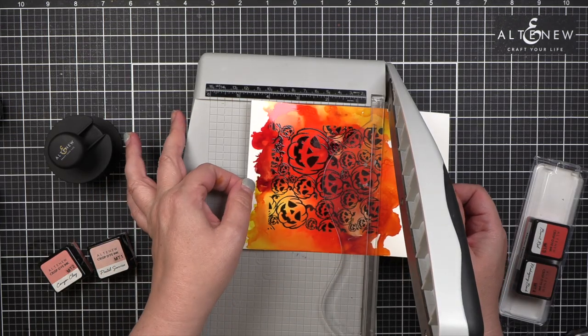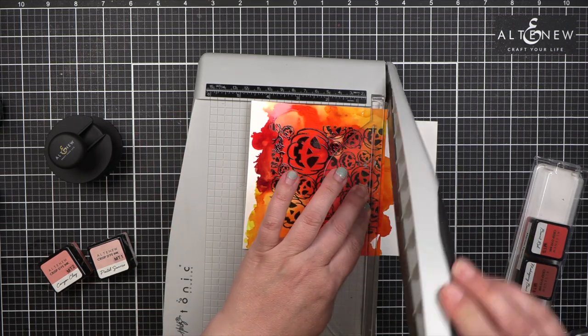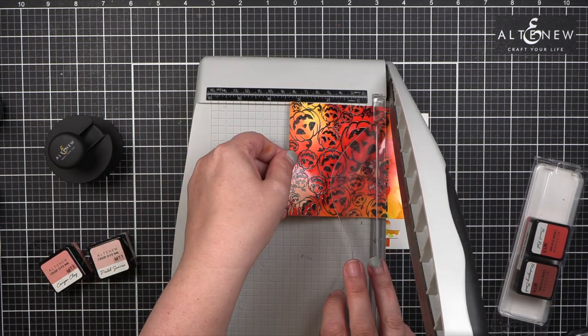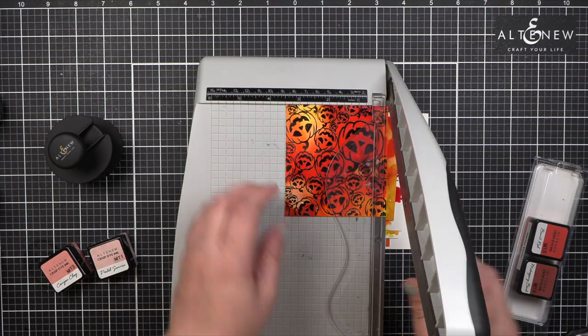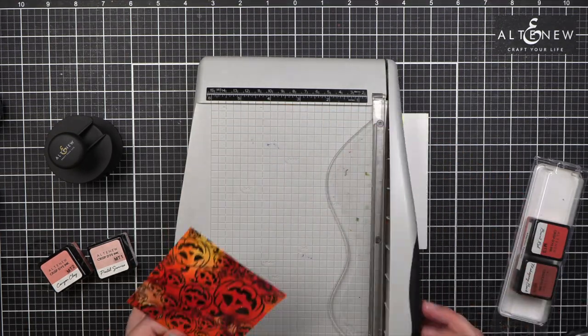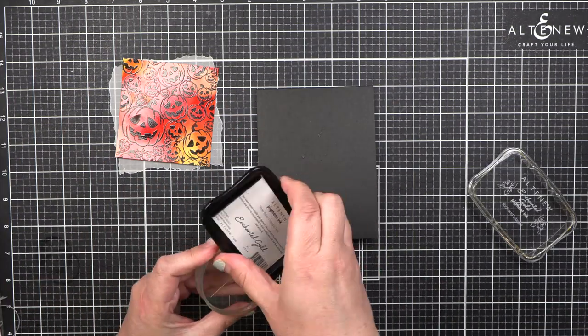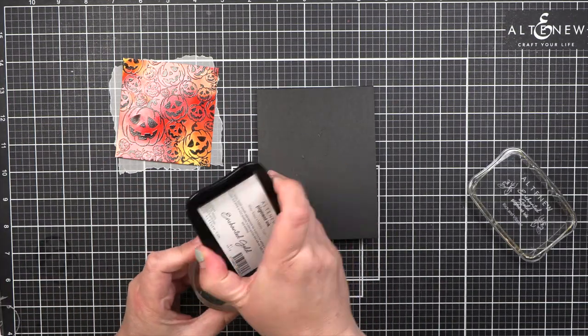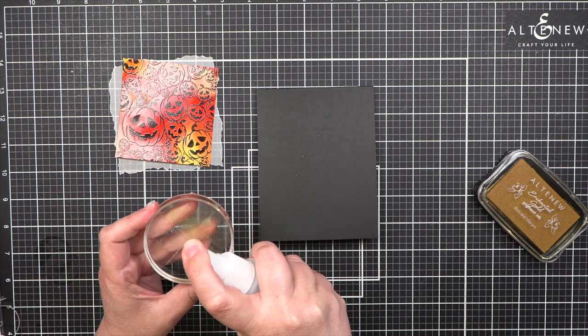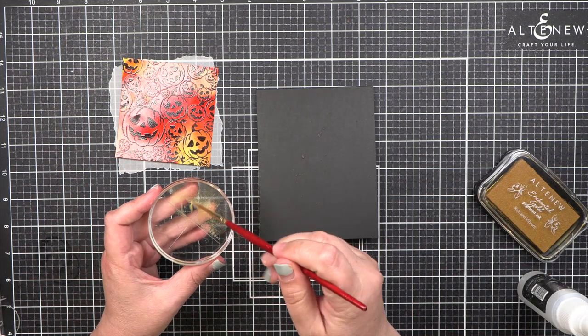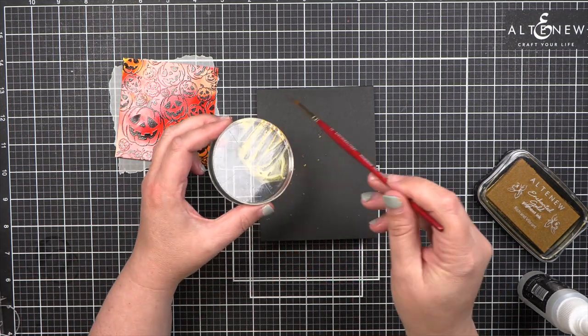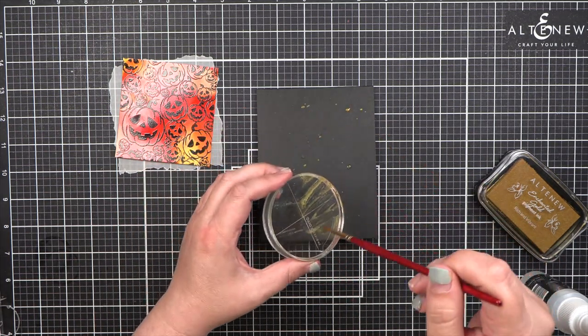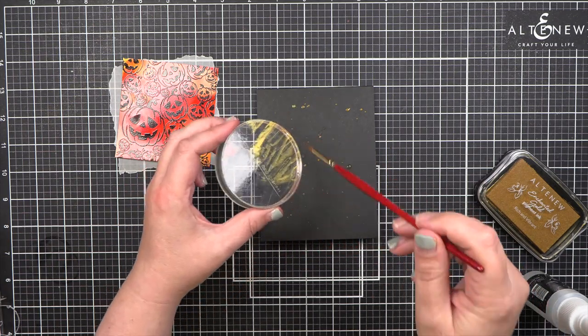So I'm going to chop this down, and this is a 4x4 stamp. I probably cut it to about just under 4 inches square, and I need to mount it on a background. So you can see I have a piece of vellum that I have torn the edges, and I'm adding some enchanted gold ink and just putting splatters on a black A2 top folding card.